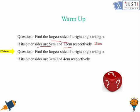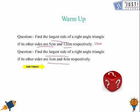Once again we need to find the largest side of a right angle triangle if its other sides are 3 cm and 4 cm. The square of 3 is 9 and the square of 4 is 16. Adding them together gives 25, which is the square of 5. So the answer is 5 cm.